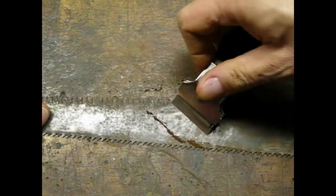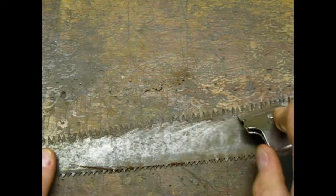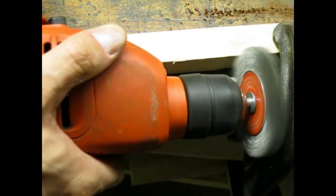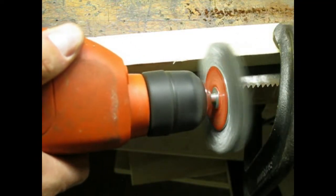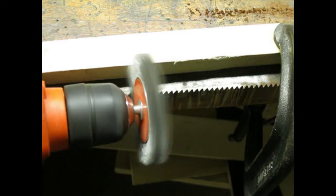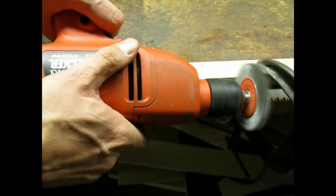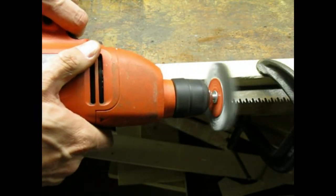First I scraped off the worst rust with a razor blade. I used a wire wheel to clean the teeth. You can only do this in one direction. If you go the wrong way, the wire wheel tries to throw the blade. Ask me how I know.